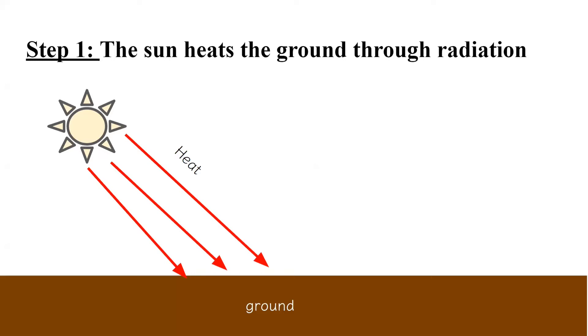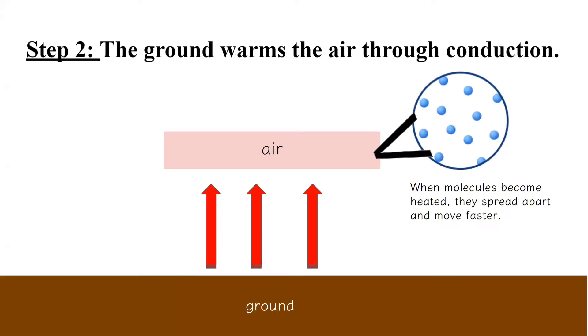Step two: The ground warms the air through conduction, which is how heat is transferred when two things of different temperatures touch. So as you can see in the picture, the heat from the ground has come into contact with the air, which is now heated.